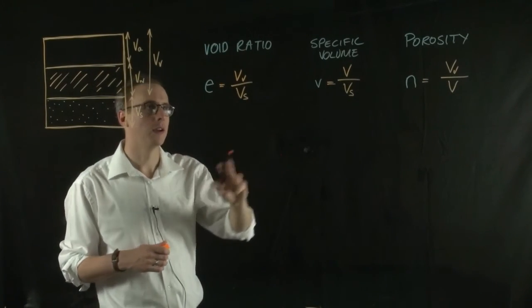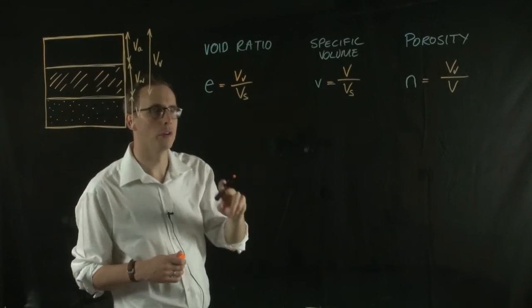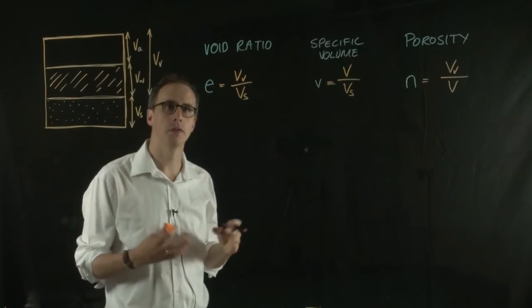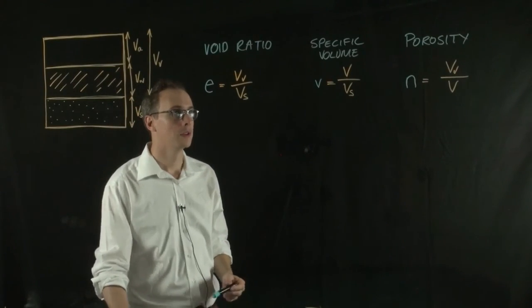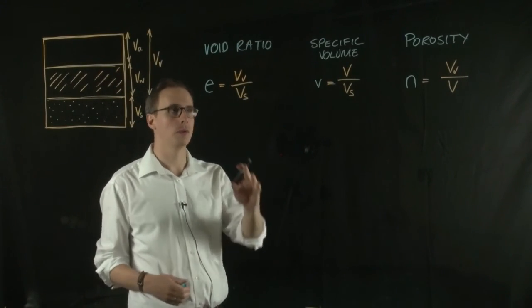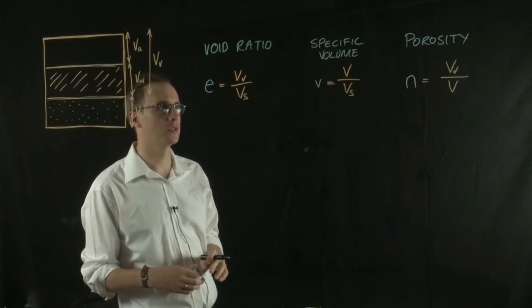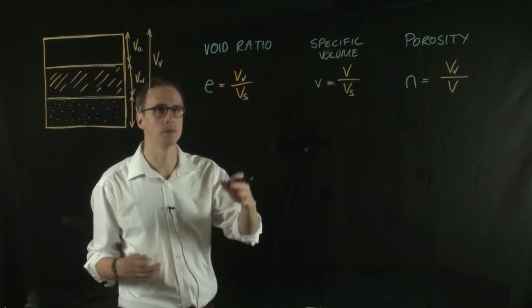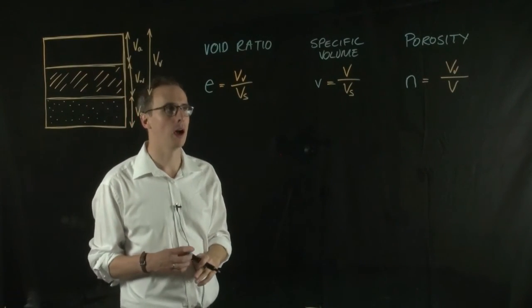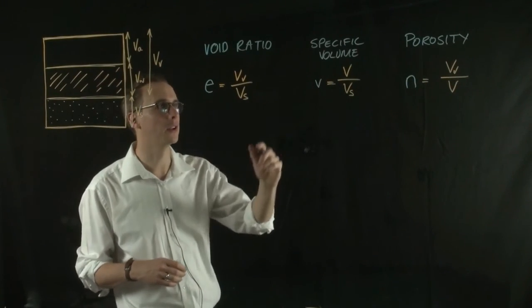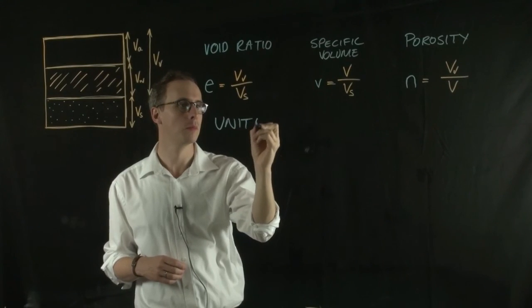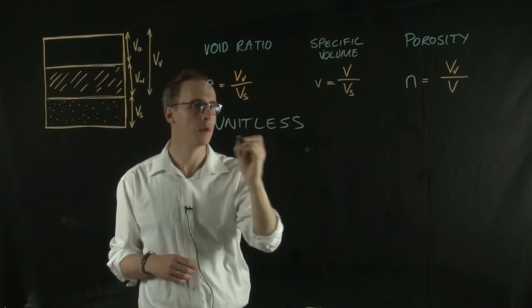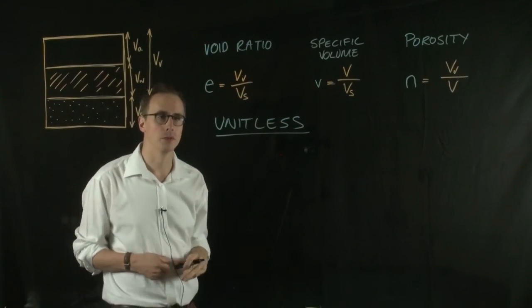All of these, as you can see, it's a volume over a volume in all three cases, so all of these are unitless. Don't make the common mistake that you attribute some sort of units to them. Often, students put volume units, meters cubed or something, but they're all unitless. And that's important to remember.